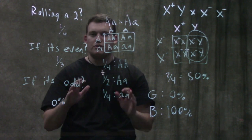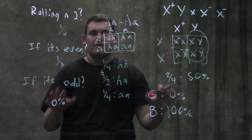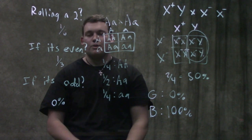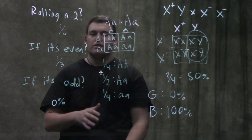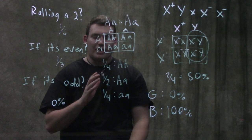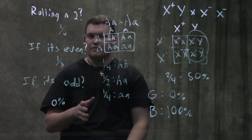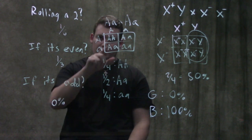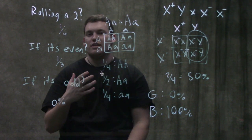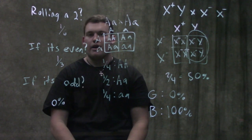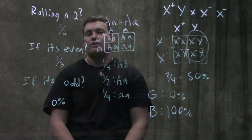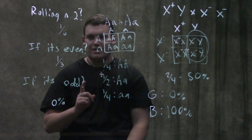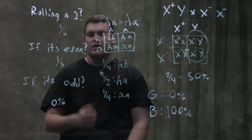Pause the video — I want you to try and figure this one out on your own. This is a conditional probability problem, and your professor won't be so nice about telling you that. You have to figure out on your own whether to use conditional probability. This couple has a child, and they want to know: what's the chance that child is a carrier?